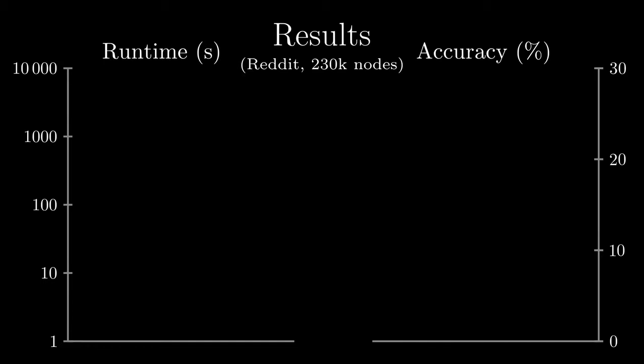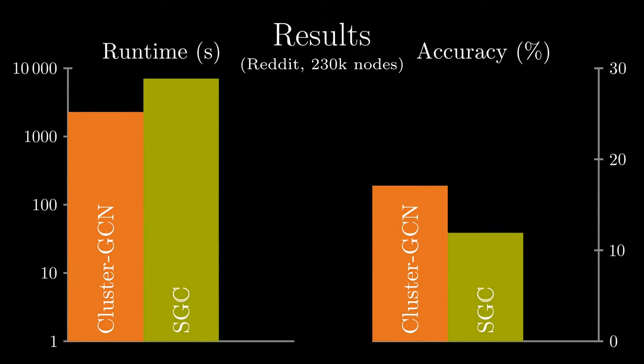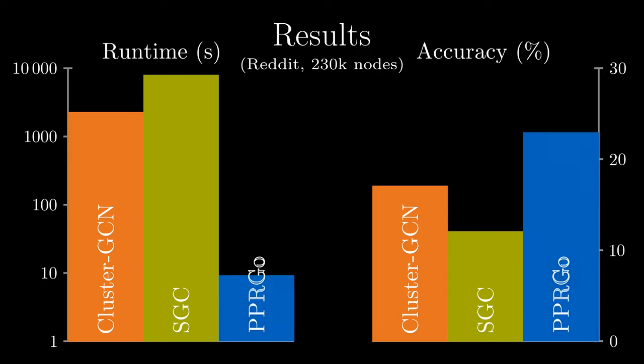The state-of-the-art methods ClusterGCN and SGC take more than 2,000 seconds from start to end. PPR-GO, on the other hand, finishes in just 13 seconds and even shows better accuracy. No sampling approaches or other tricks come close to this 100-fold improvement.